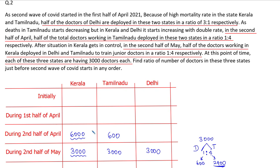Out of those 6000 Kerala doctors, 2400 will go to Tamil Nadu, so 600 plus 2400 equals 3000. Then 600 doctors are transferred to Delhi. After adding those 600 doctors, the number of doctors in Delhi becomes 3000. So during the second half of April, the number of doctors in Delhi was 3000 minus 600, which equals 2400.